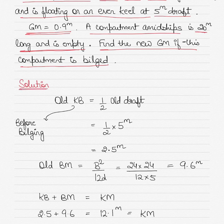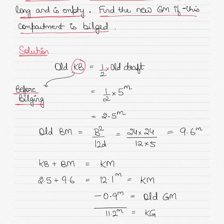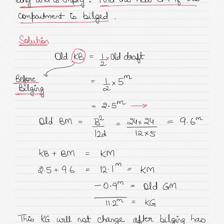Based on the old draft, that is the draft before bilging, the old KB before bilging can be calculated by half times the old draft. The draft was 5 meters as given to us in the question, so KB will be half of 5, which is equal to 2.5 meters before bilging.